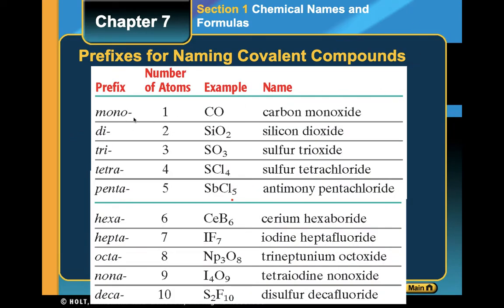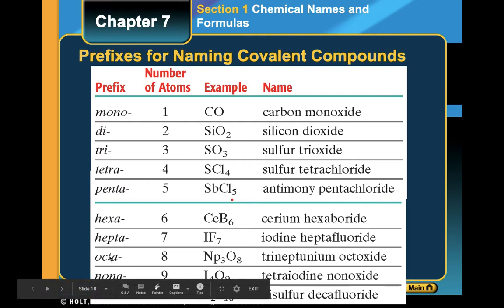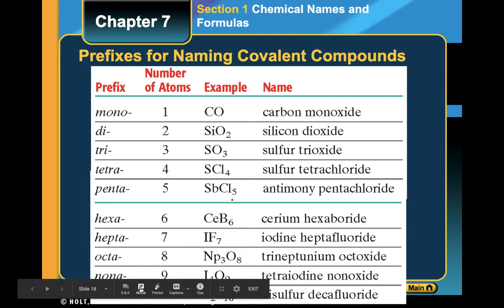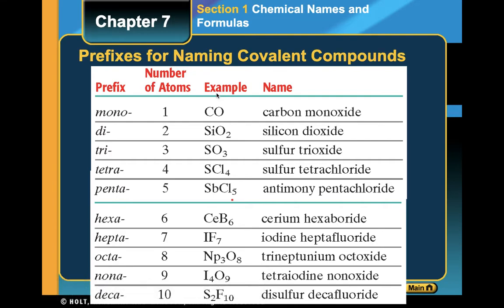Here are the prefixes: mono means one, di means two, tri means three, tetra four, penta five, hexa six, hepta seven, octa eight, nona nine, and deca ten. We're going to use these prefixes in order to indicate how many of each atom we have.